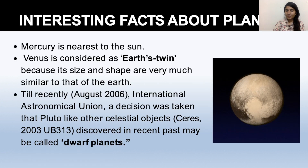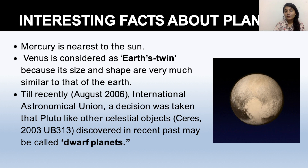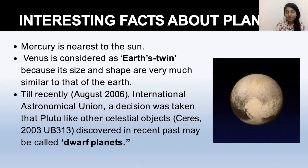Some interesting facts about the planets: Mercury is the nearest to the Sun, which means it might be expected to be the hottest planet. Venus is called the twin sister of Earth because of its similar shape and size. And as for Pluto, it is not part of our planets — it is called a dwarf planet.